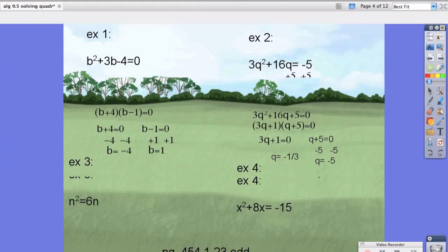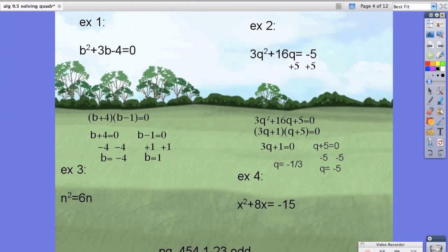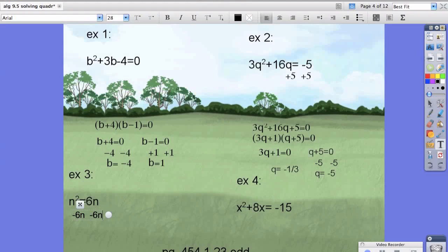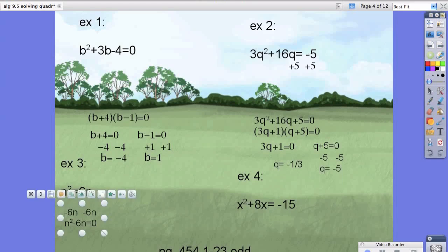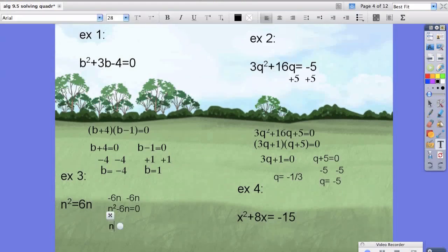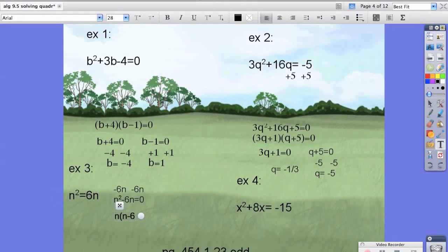Example 3, it's actually a lot simpler than it looks. Remember, we need to get it equal to zero. So we're going to subtract 6n from both sides. We get n squared minus 6n equals zero. You'll notice on the left-hand side, they both have an n, so I'm going to factor an n out of both of them. And we're left with n times the quantity n minus 6 equals zero.